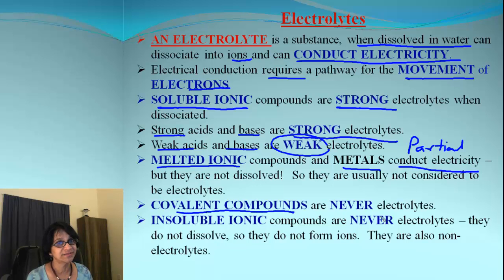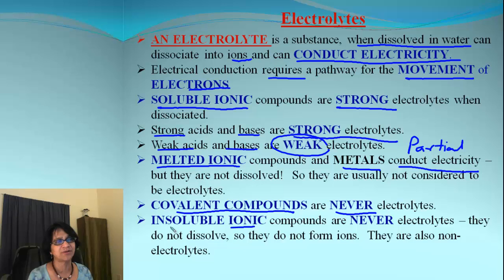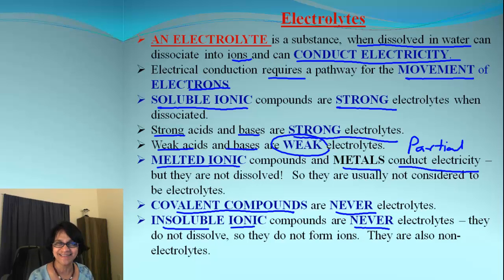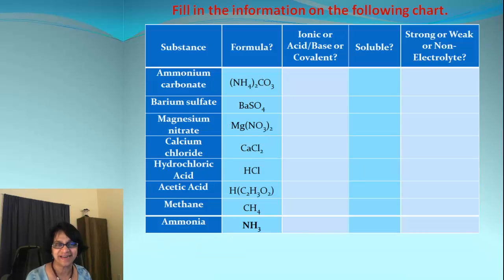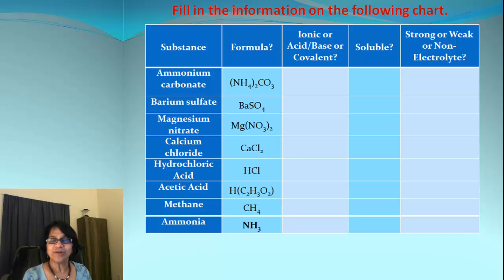Covalent compounds cannot form ions, so they will never be electrolytes. Ionic compounds that are insoluble — that don't dissolve in water — can never be electrolytes either. Using these rules we can easily predict what will happen with each compound.